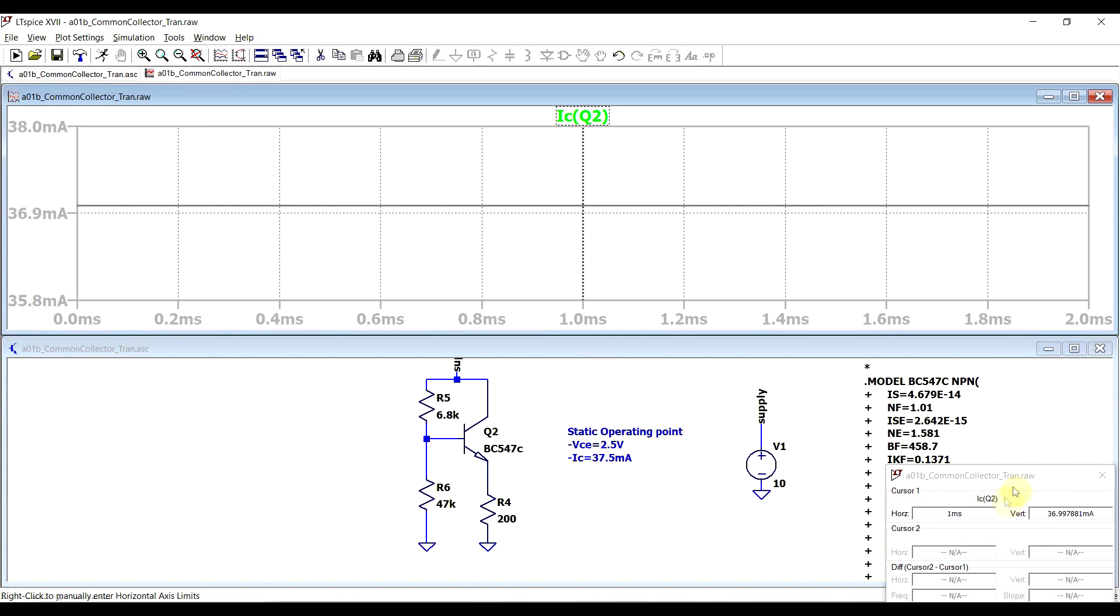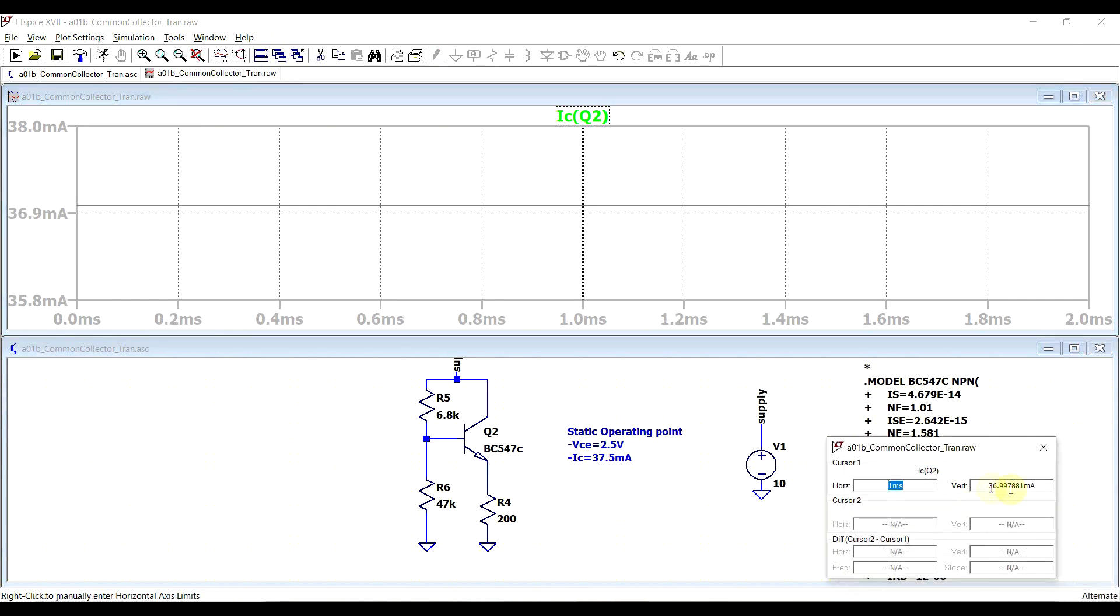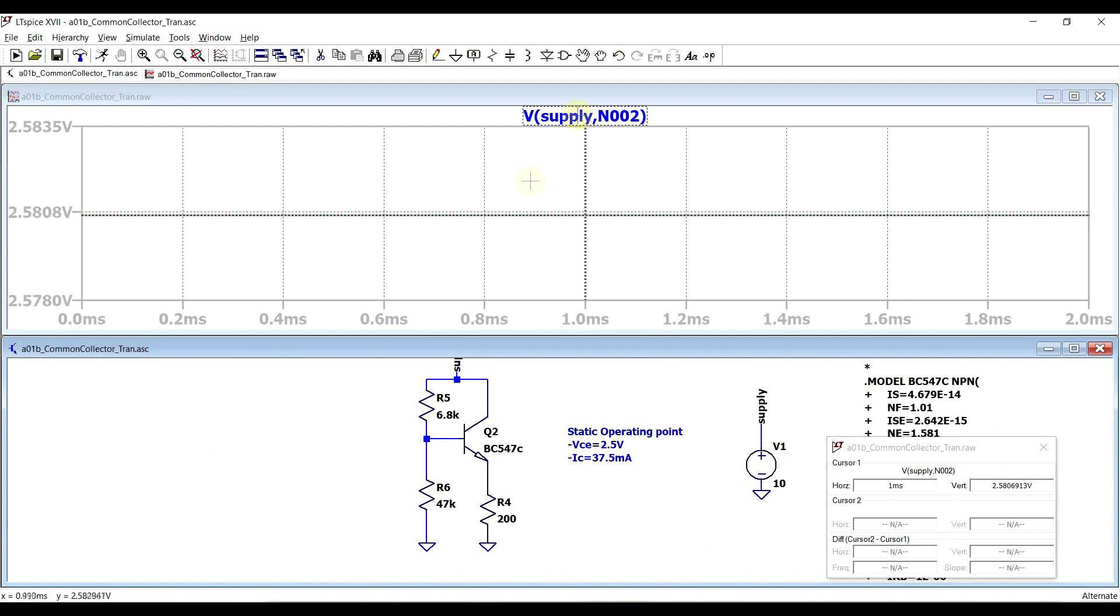Very close to the intended value, and the collector emitter voltage is at 2.58, so again very close to what we were expecting.